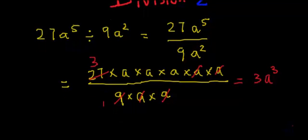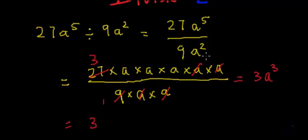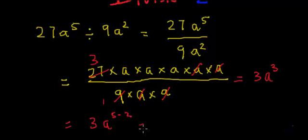What we are actually doing is normal division among constants or numerals, and we are subtracting the indices or the powers of variables. So, 27 divided by 9 gives us 3. And we have only one variable which is a. We have a to the power 5 in the numerator and a to the power 2 in the denominator. So this can be written as a to the power 5 minus 2, because 2 a's of the denominator cancel out exactly 2 a's from the numerator.